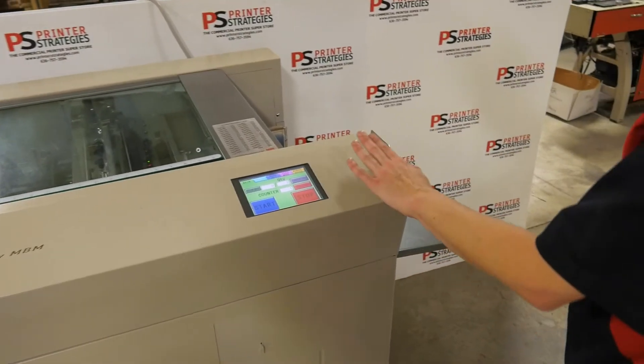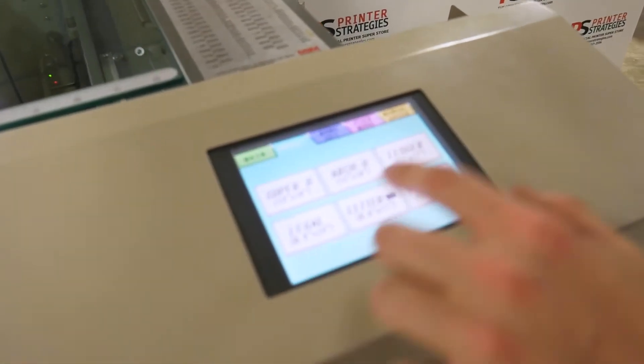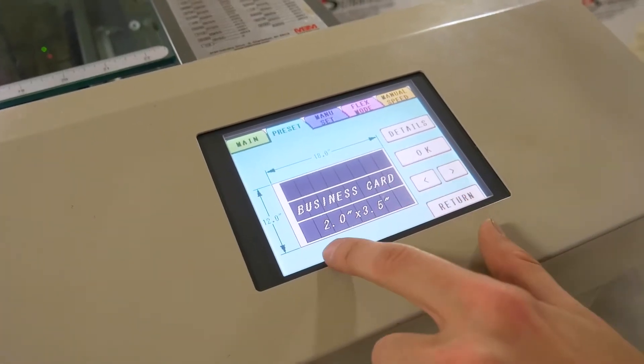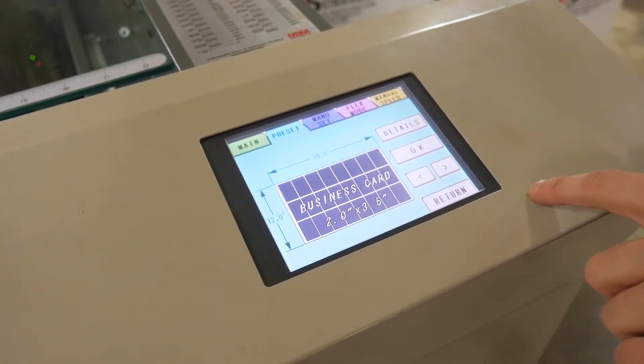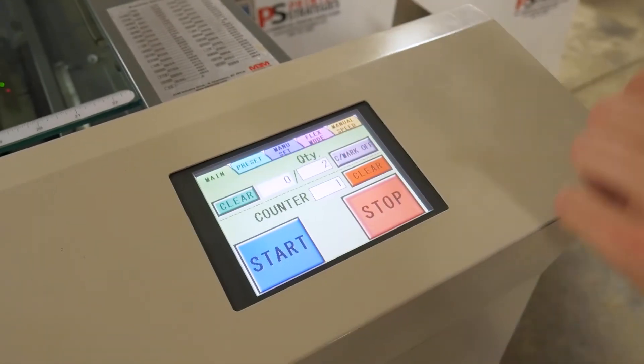We're going to do a quick demonstration of some business cards here for you. So we have our preset of our 1218. We don't want all together. We want ours to bleed a little bit, which is normally how you would print things. That is set now.